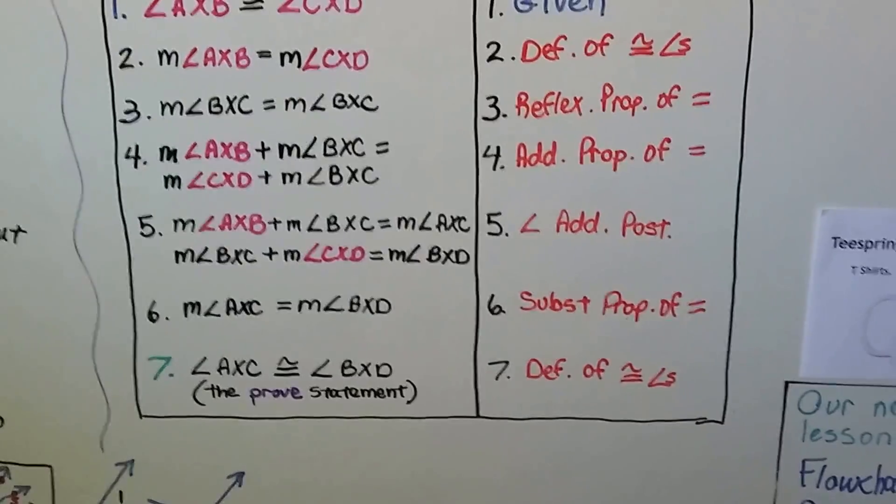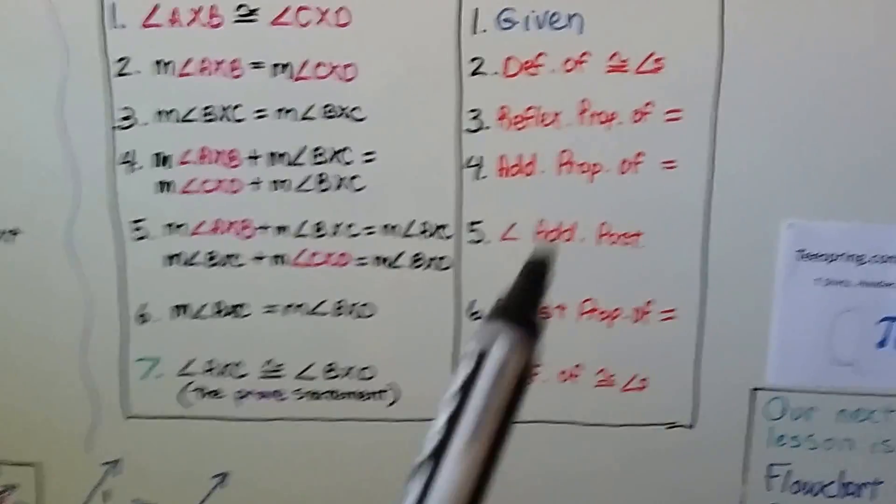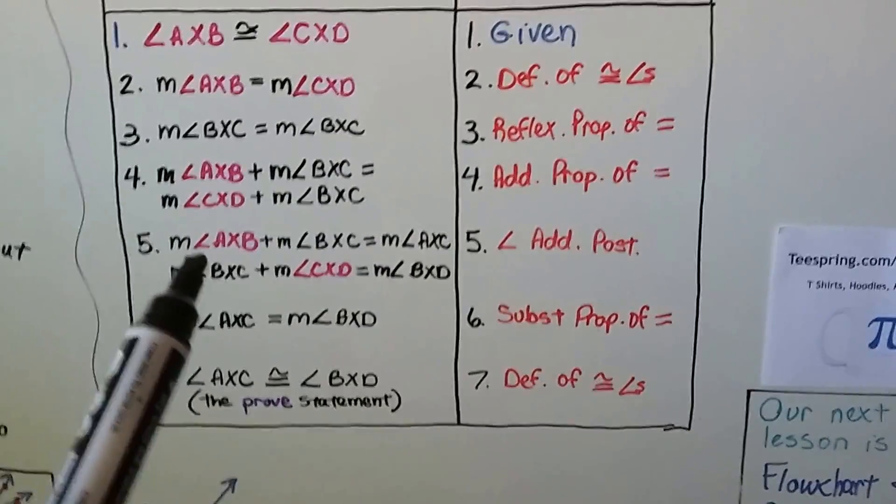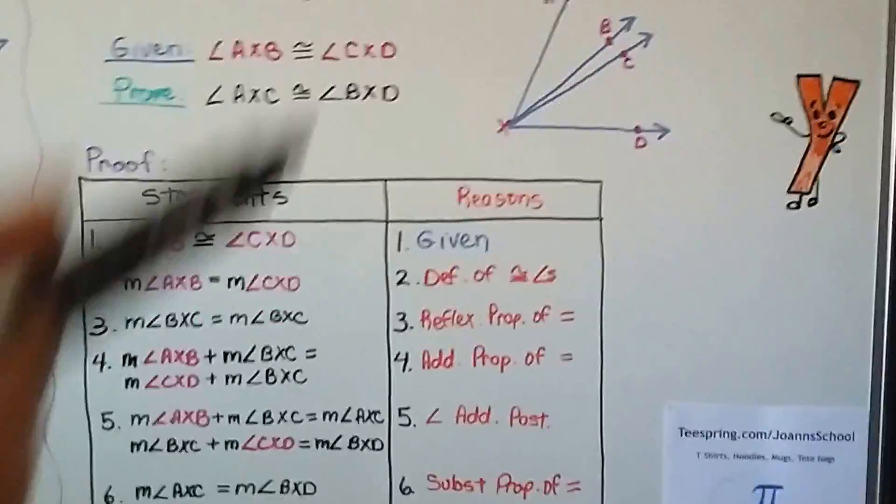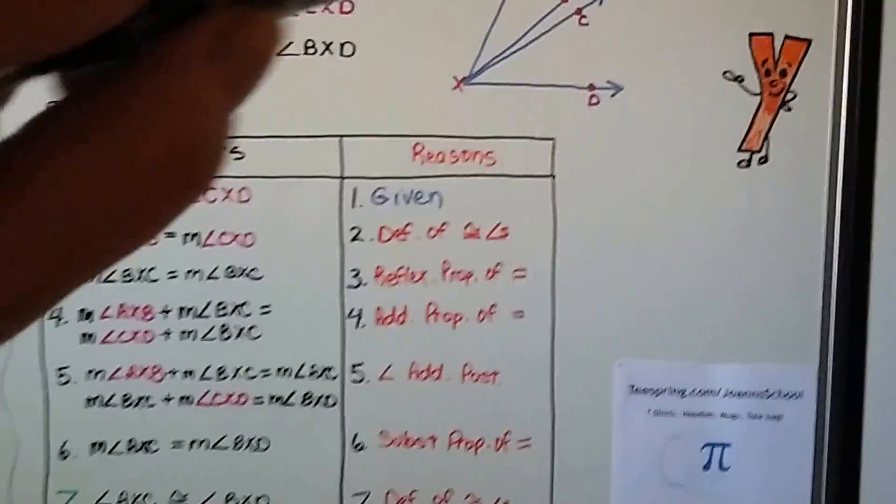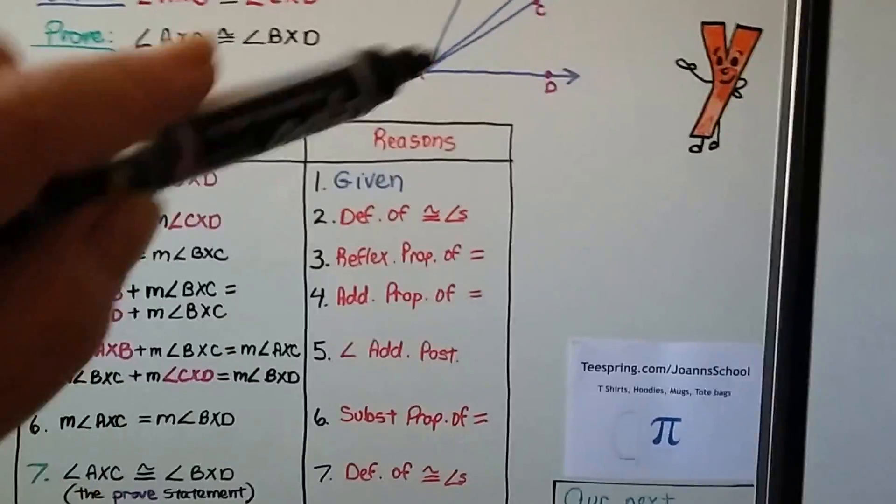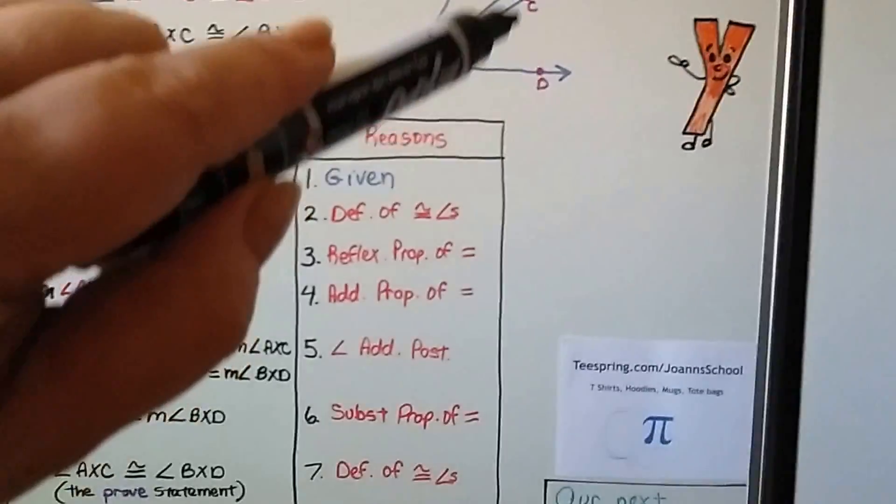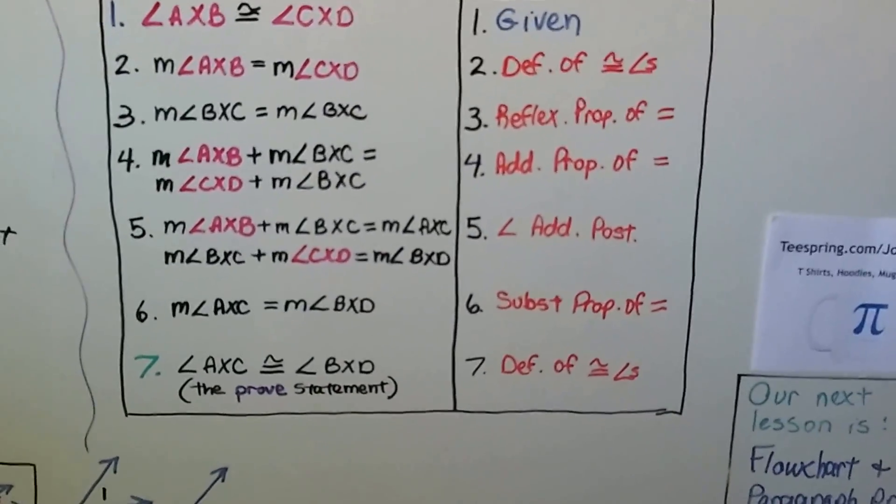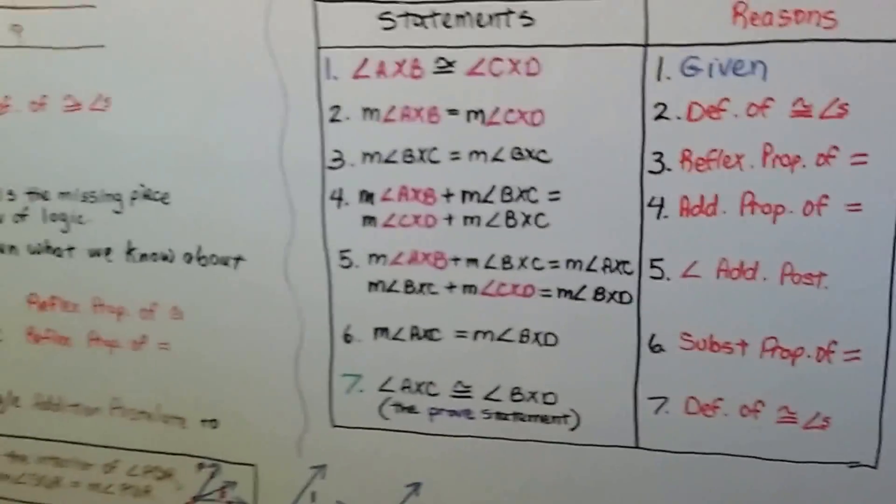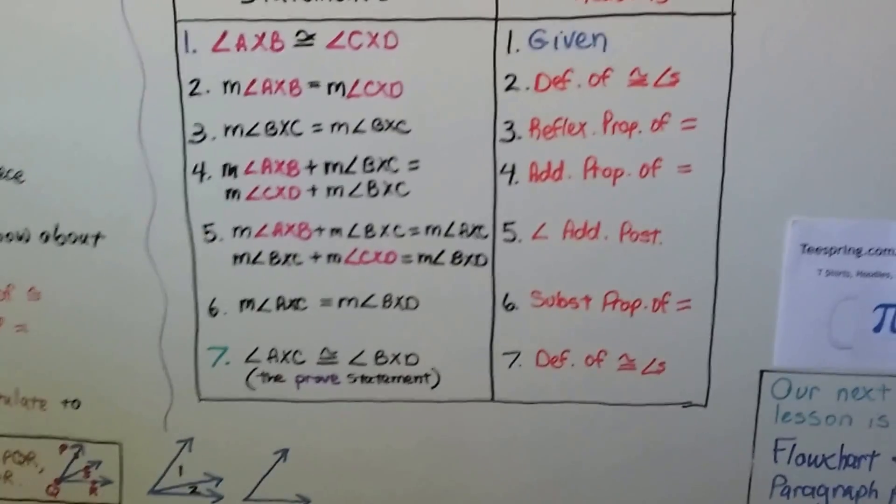And we basically reiterate it in number 5. So we're saying that these are equal to each other in number 4. That's the addition property of equality. Then we're saying the measure of angle AXB plus the measure of angle BXC, that's the two top small ones, is equal to the measure of angle AXC. Then we do it for the other two. We say the measure of angle CXD plus BXC equals BXD. That's both of them. That's the angle addition postulate. So now we have number 6, because we turned that congruent sign into an equal, and our reasoning is the substitution property of equality.